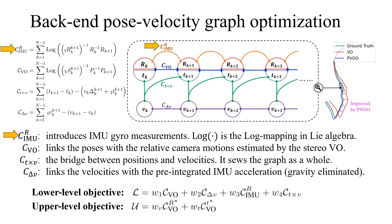The IMU rotational constraint introduces IMU gyro measurements into the graph. The VO estimation constraint links the poses with relative camera motions estimated by the stereo VO. The translation velocity cross-constraint bridges the positions and velocities through the graph as a whole, and the delta velocity constraint links the velocities with the preintegrated IMU acceleration. The graph optimization objective, also the lower-level objective, is the weighted sum of these four constraints, while the upper-level objective is the VO constraint with weighted rotational and translational parts.